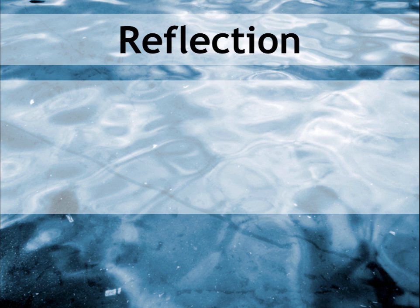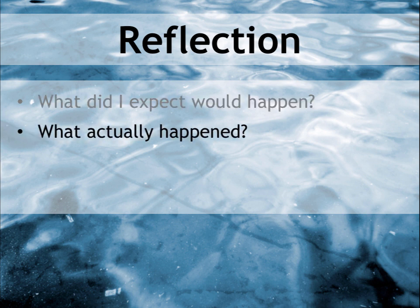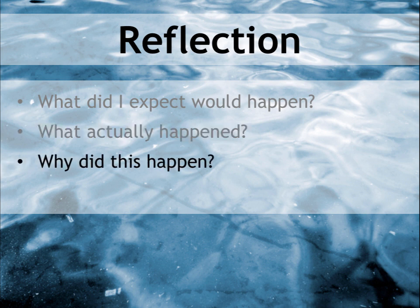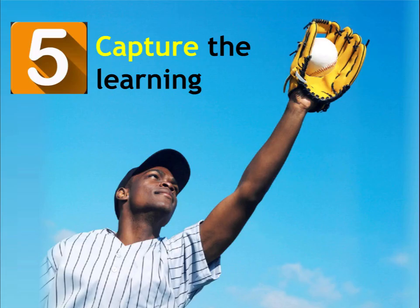Here are some questions that might help you during reflection. What did I expect to happen — what did you think would happen as a result of the action? What actually happened? Seldom is an outcome exactly what we envisioned. You may even find that the problem got worse rather than better. Why did this happen? Try to identify the forces that influenced the outcome. What will I do next? In view of what happened, what is the next step you will take? Finally, you need to capture the learning. This is a critical step in the process, without which the process is incomplete.